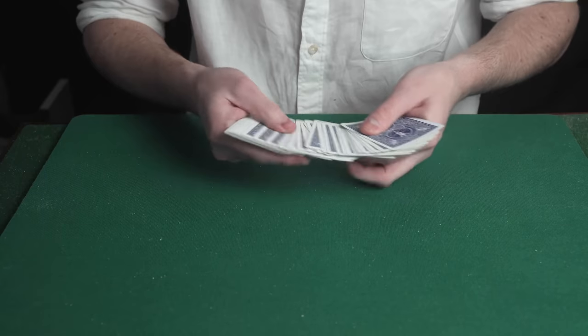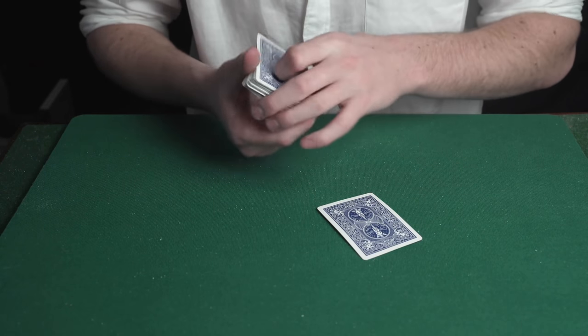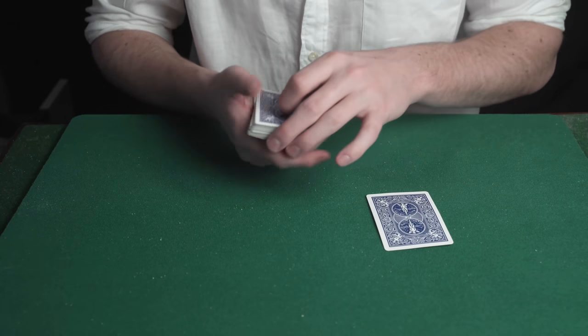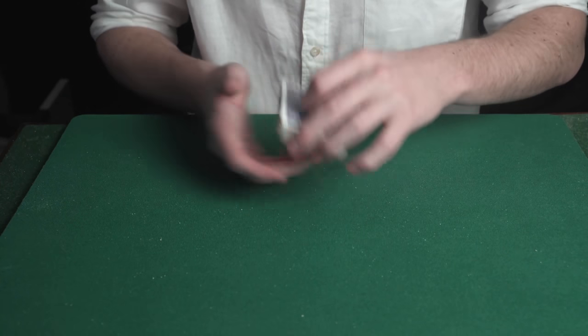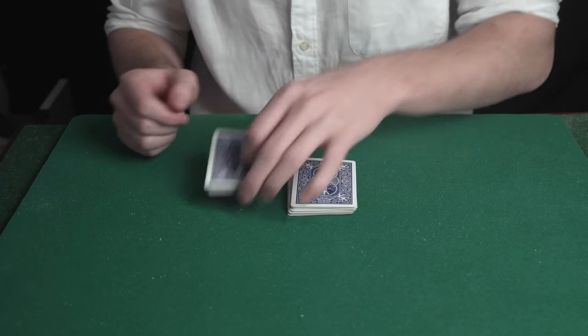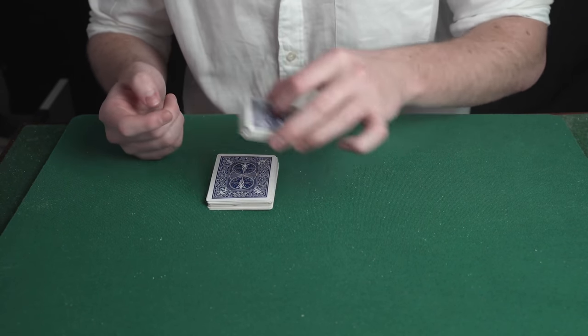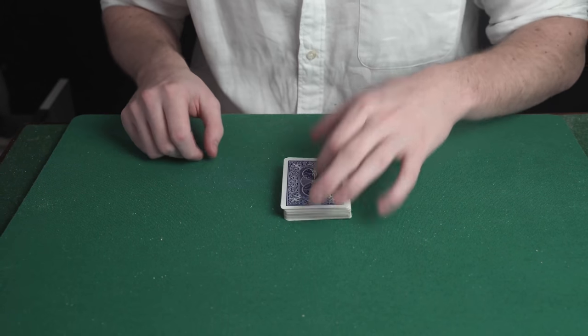Now let the spectator choose any card that they like. In this case the spectator has chosen the seven of diamonds. Place the seven on the top of the deck and then you can let the spectator cut the cards in half and then cut them in again and this places our special card on top of the spectator's card.